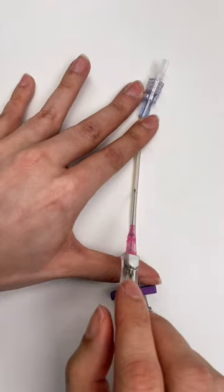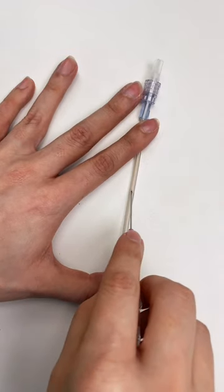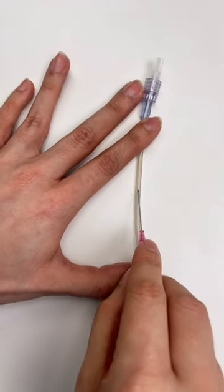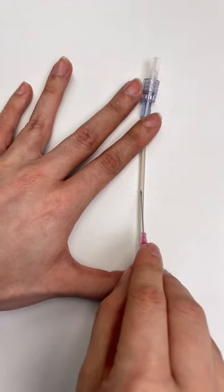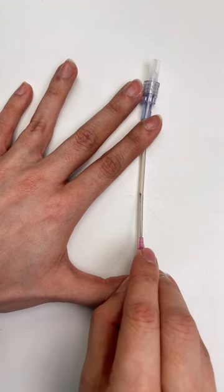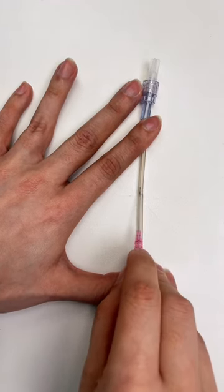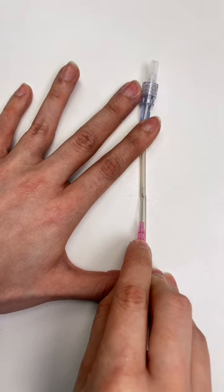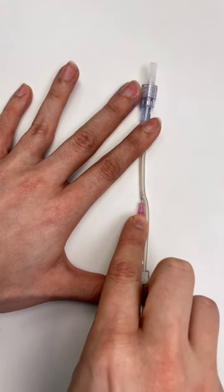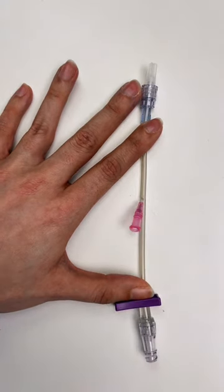So when you get flash, that's awesome. It means that you have actually pierced the vein. Now though, is the time for you to situate that catheter by dropping your angle, advancing the IV catheter a little bit farther, and then you're going to be able to actually slide the catheter off, leaving it in your patient's vein.